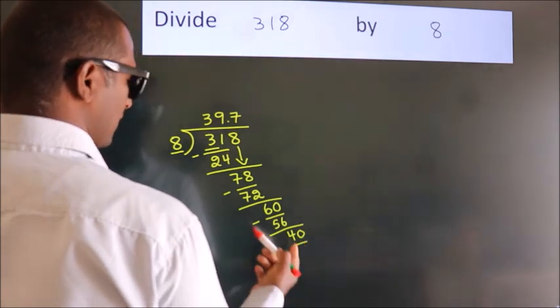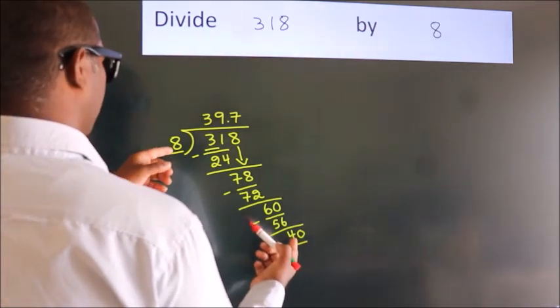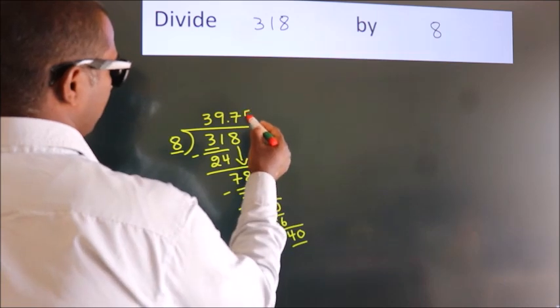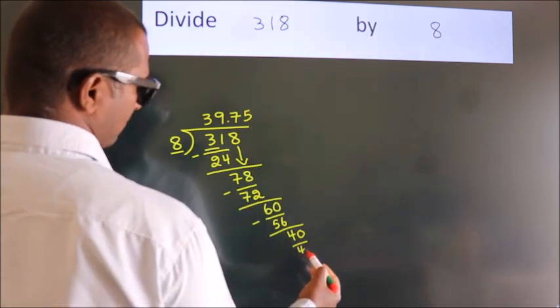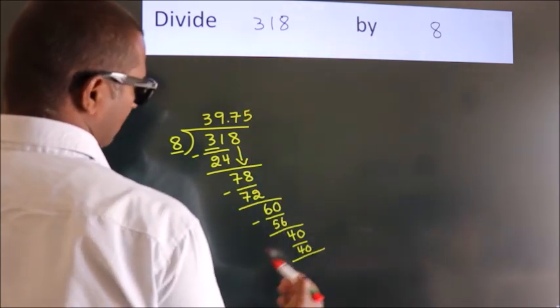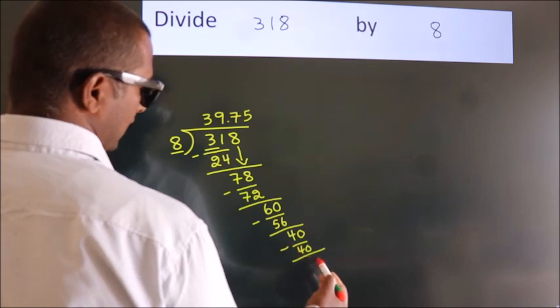When do we get 40? In 8 table, 8 fives, 40. Now, we subtract, we get 0.